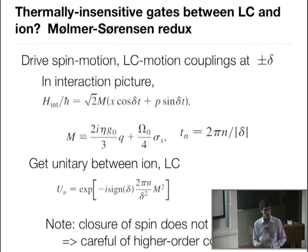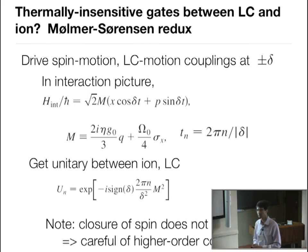There will always be a sixth-order correction you can't remove with echo techniques. As for the question of adding another nonlinear element to make the LC nonlinear: the goal is actually ion-ion coupling, which requires something long range. Nonlinear elements concentrate energy locally, so you want distributed elements to couple ions at long distances.